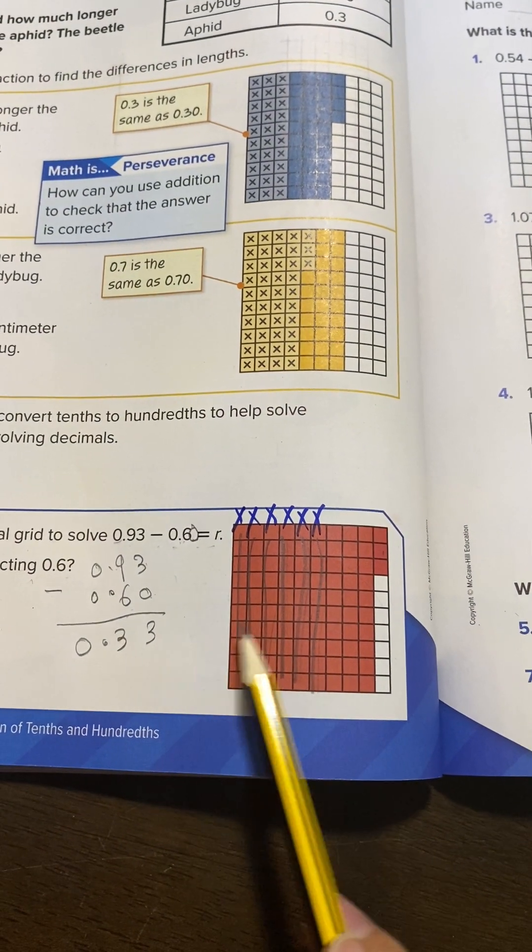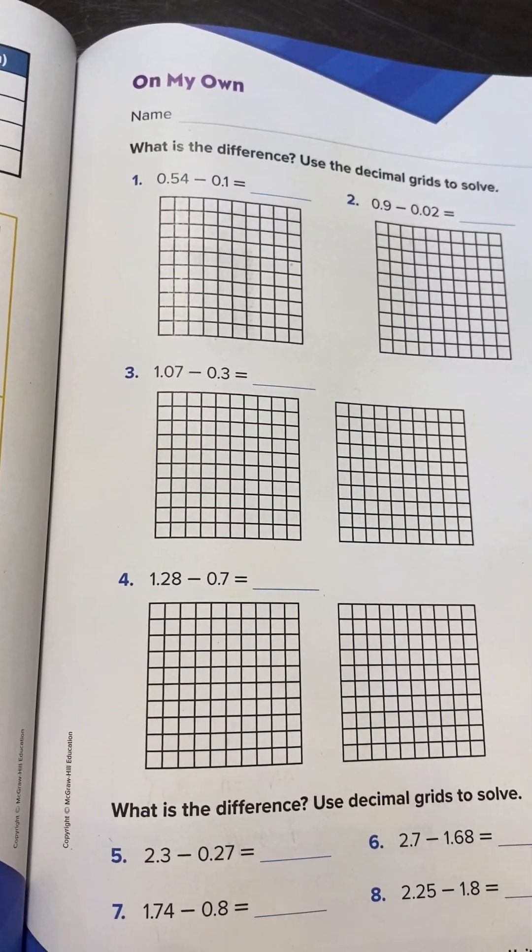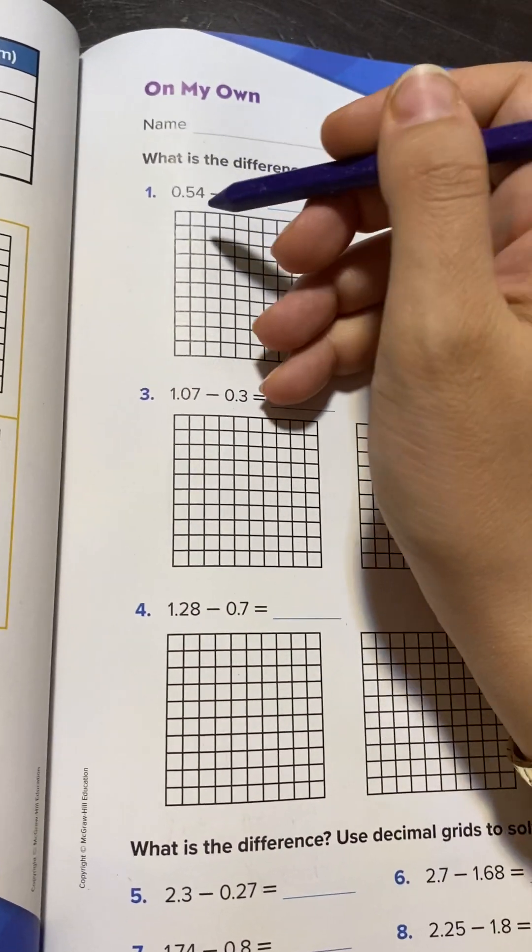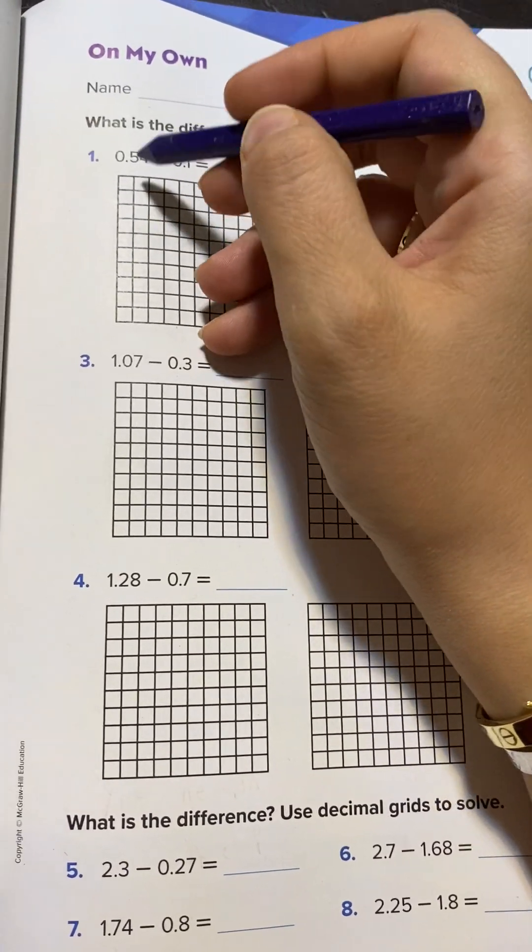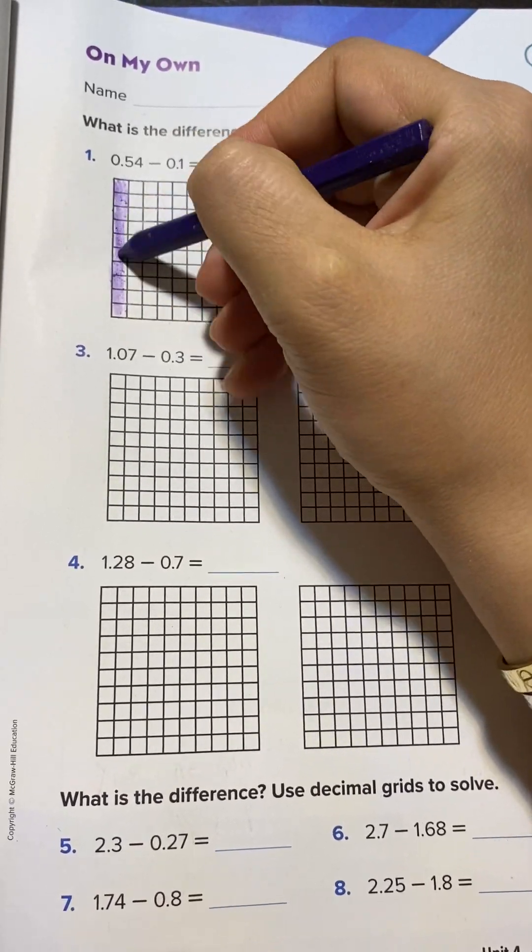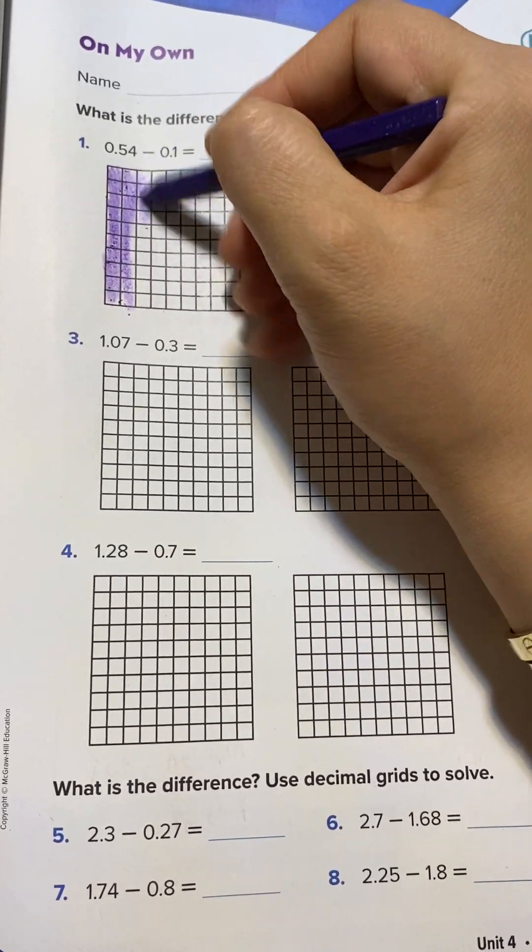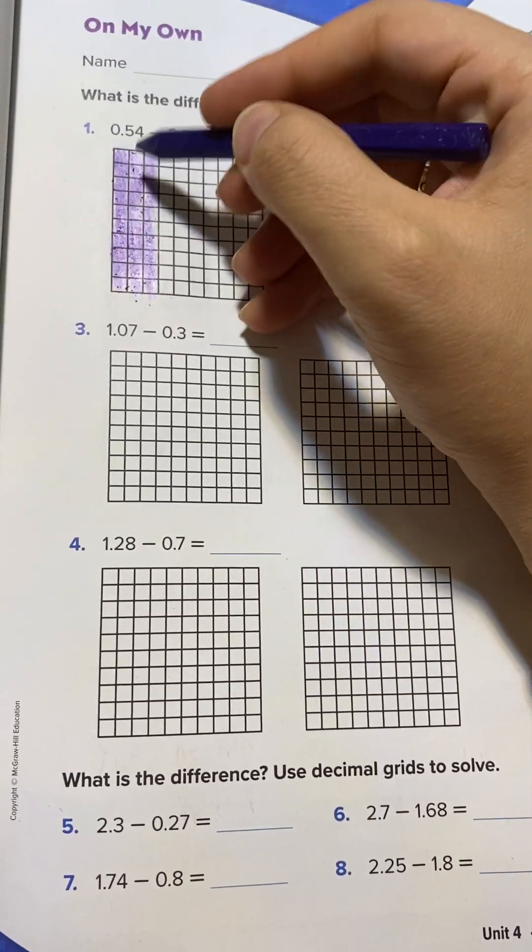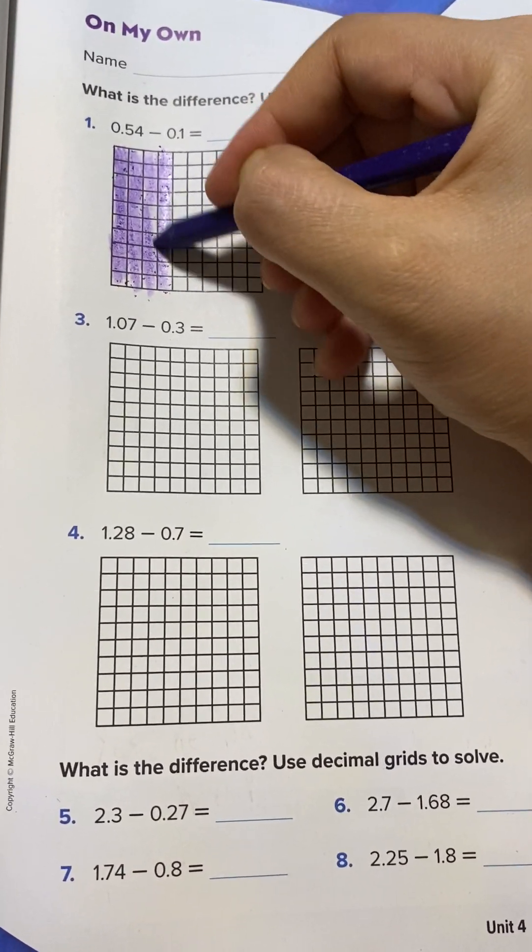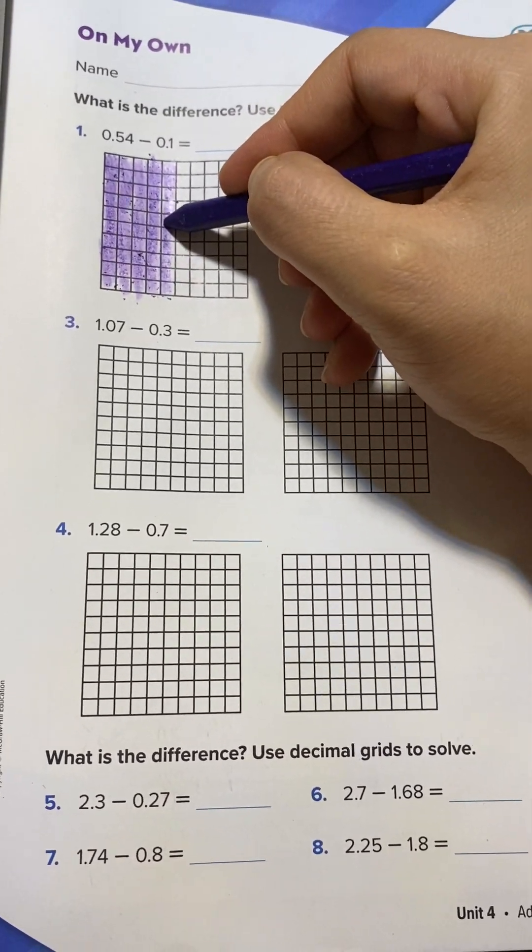I did it two ways. Let's do this way using the decimal grid. What is the difference? Use the decimal grid to solve. I will color 54 squares. Each column is 10, so I will color 5 columns: 10, 20, 30, 40, 50, and 4 more.